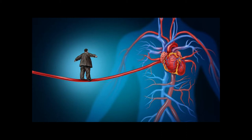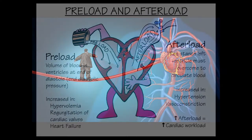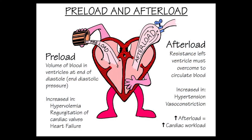There are a few factors that affect the stroke volume. First is the preload on the heart, which is the volume of blood entering the ventricles. This is affected by the blood volume in the body, the venous blood returning to the heart, and the atrial output.